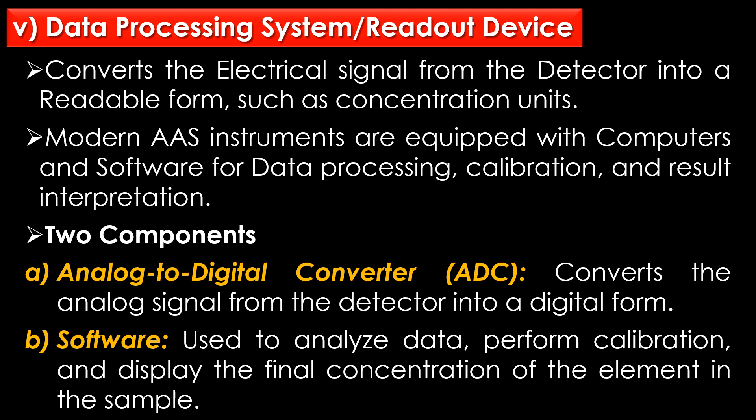The fifth part is the data processing system or readout device. It converts the electrical signal from the detector into a readable form such as concentration units. Modern AAS instruments are equipped with computers and software for data processing, calibration, and result interpretation. There are two components: the analog-to-digital converter (ADC), which converts the analog signal from the detector into digital form, and the software, which is used to analyze data, perform calibration, and display the final concentration of the element in the sample.